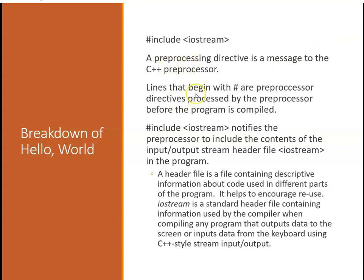Now we look at our include iostream. This is what's called a preprocessing directive - it's a message to the C++ preprocessor. Before the compiler runs, something called the preprocessor runs which basically preps your program. Lines that begin with the pound sign are preprocessor directives and they're processed by the preprocessor before the program is compiled. Include iostream notifies the preprocessor to include the contents of the input output header file. A header file is a file containing descriptive information about code used in different parts of the program. Iostream is a standard header file containing information used by the compiler when compiling any program that outputs data to the screen.